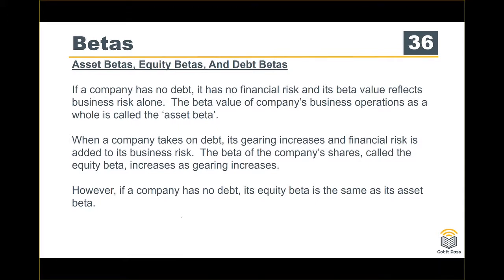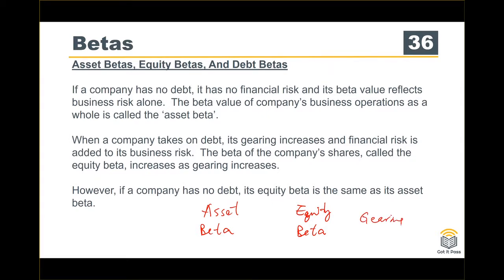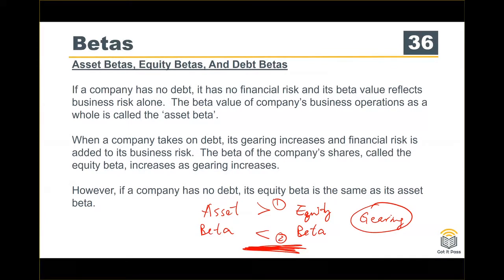Now a question: if a company has gearing, which is correct — is asset beta greater than equity beta, or is asset beta smaller than equity beta? The answer is that asset beta is smaller than equity beta, because equity beta considers both financial risk and business risk, while asset beta only considers business risk.